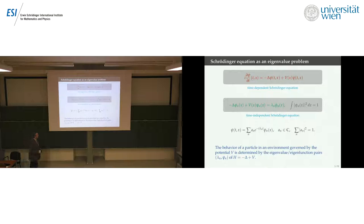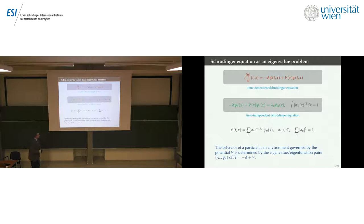The takeaway message is that if you're trying to understand the behavior of a particle, or more generally a system of particles, in an environment governed by a potential function V, it's determined by finding the eigenvalues and eigenfunction pairs λ_n, Ψ_n of the Hamiltonian — minus Laplacian plus V.